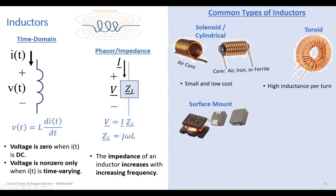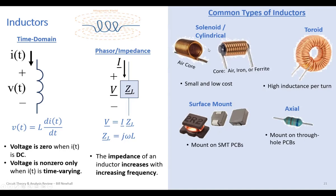There are surface mount inductors with terminals on the bottom and sometimes a bobbin core — you can mount those directly on printed circuit boards. For through-hole PCBs, there are also axial inductors. You can buy these instead of winding them yourself.